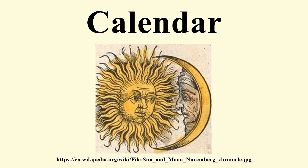Very commonly a calendar includes more than one type of cycle, or has both cyclic and acyclic elements. Most calendars incorporate more complex cycles; for example, the vast majority of them track years, months, weeks, and days. The seven-day week is practically universal, though its use varies, and it has run uninterrupted for millennia.